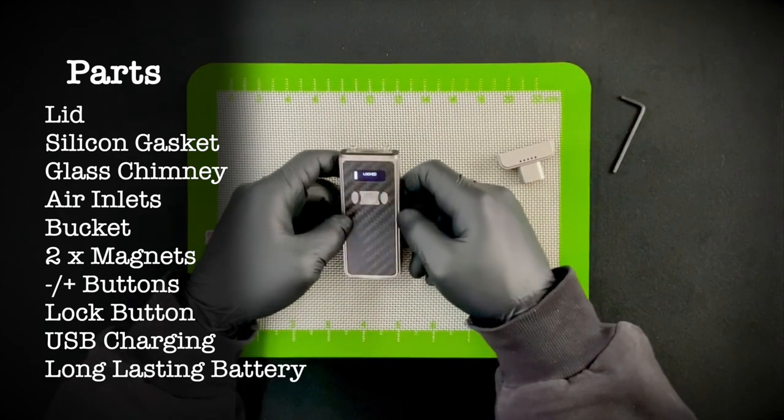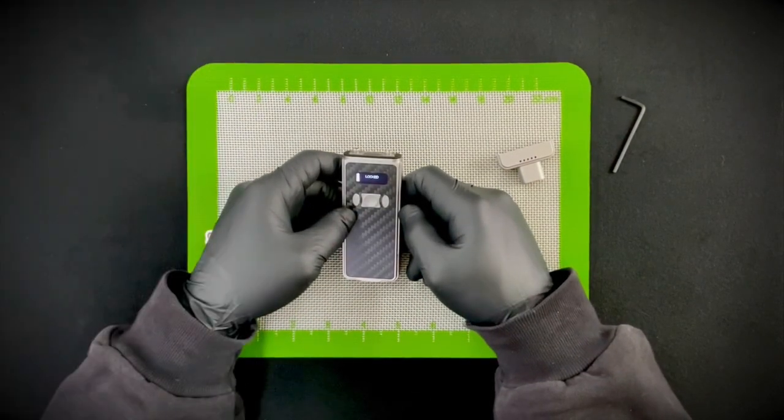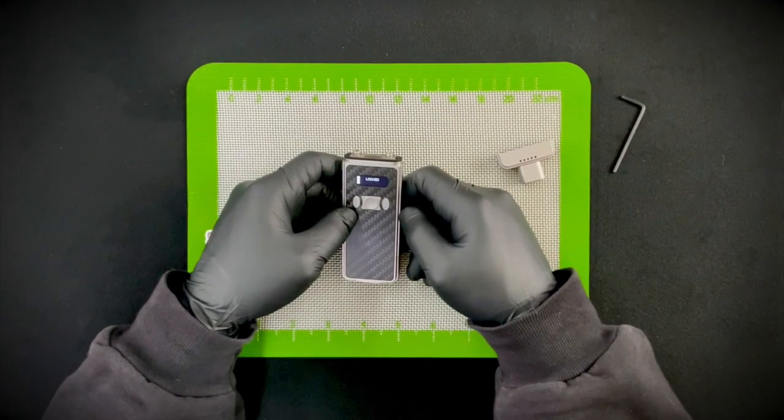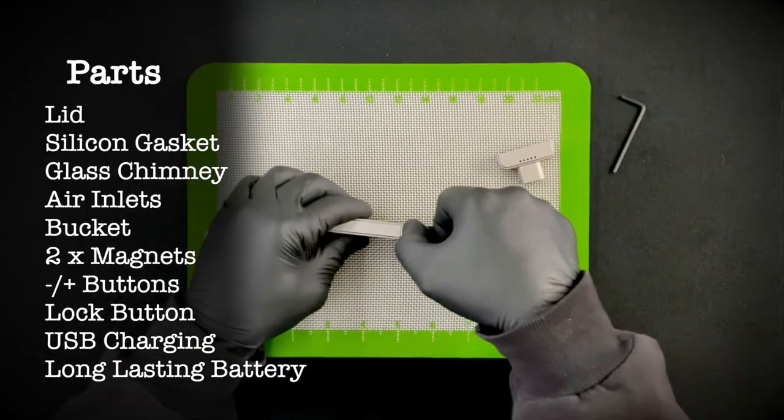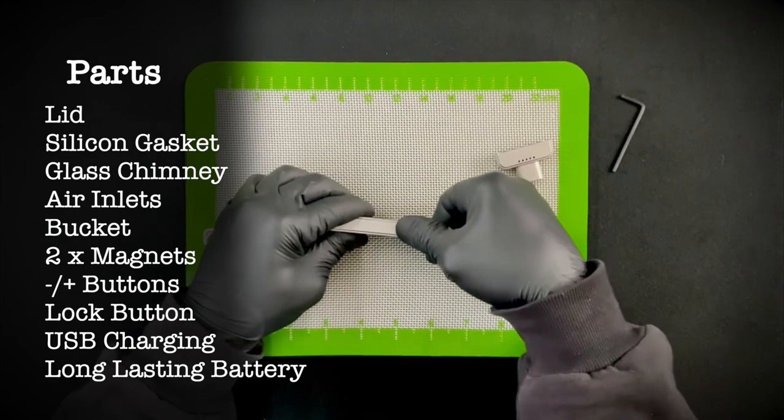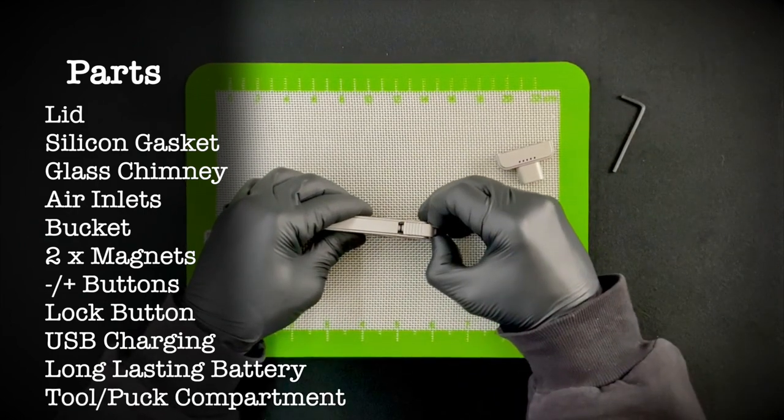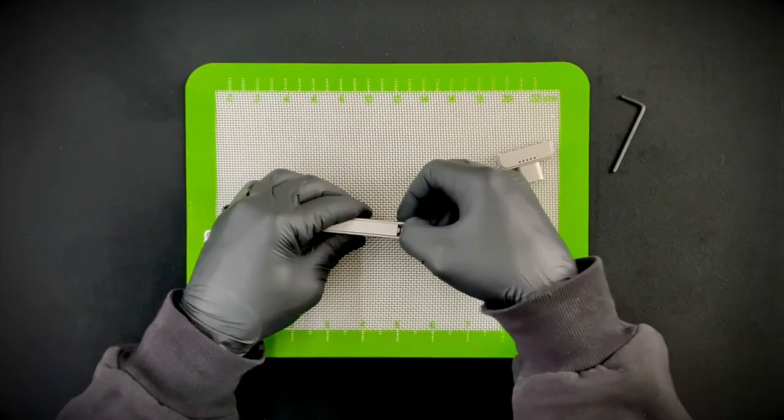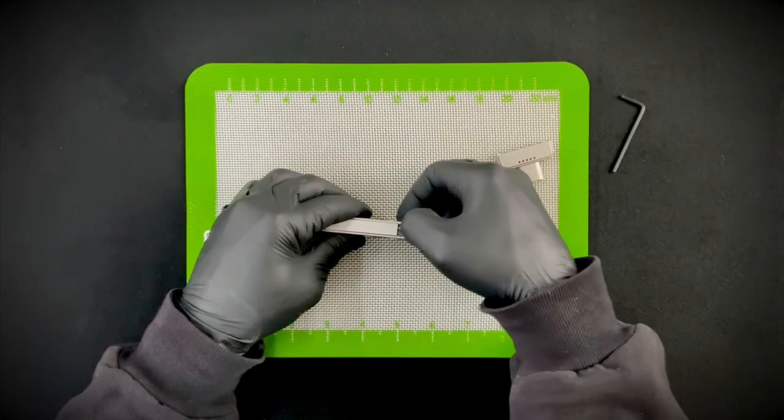Then over here, USB-C charging, which is actually quite fast. And the battery life on this is really good. You're getting a bunch of hits off of it before needing to charge the battery. Then the last little part of the device is down here, which is the tool and dab puck compartment. You just put your thumb on it and use your nail to kind of just drag this out.